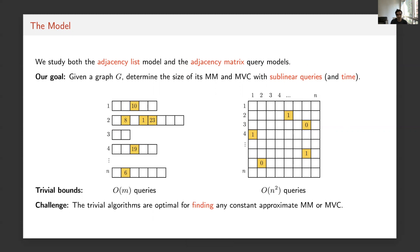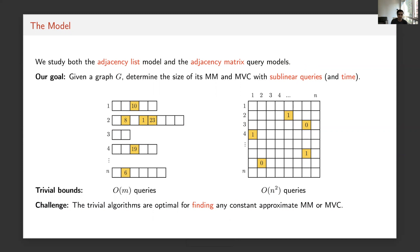Unfortunately, it turns out that to find any constant approximation of a matching or minimum vertex cover — meaning to actually output the edges or vertices — these trivial bounds are optimal. But the key word is 'finding.' To just estimate the size, we might be able to do it in sublinear time, and that will indeed be the case as we'll see.